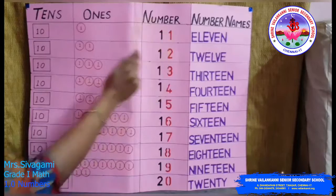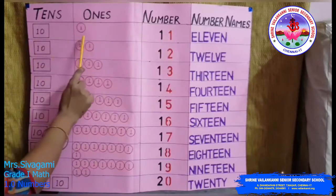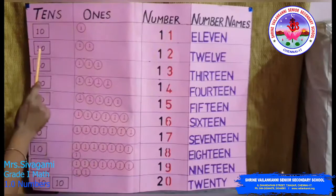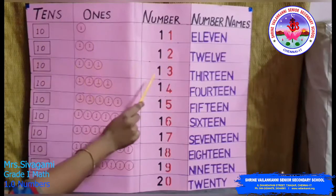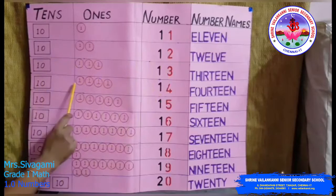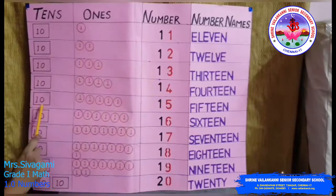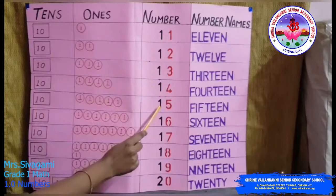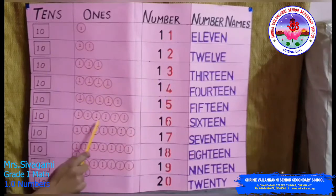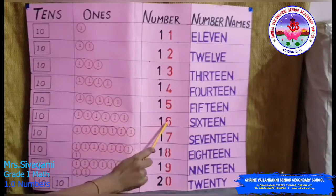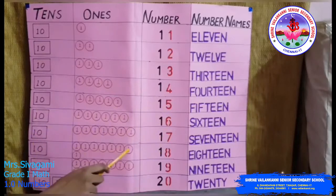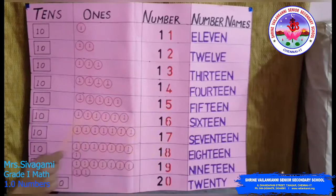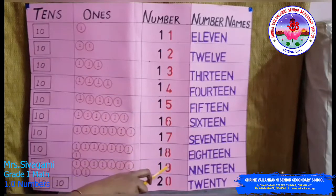Number 11 is 1 ten and 1 one. 1 ten and 2 ones make 12. 1 ten and 3 ones make 13. 1 ten and 4 ones make 14. 1 ten and 5 ones make 15. 1 ten and 6 ones make 16. 1 ten and 7 ones make 17. 1 ten and 8 ones make 18. 1 ten and 9 ones make 19. And 2 tens make 20.